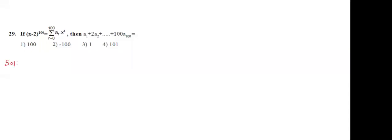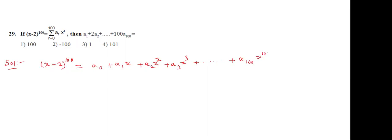Now observe the 29th question. (x-2)^100 is expanded as a₀ + a₁x + a₂x² + a₃x³ + ... + a₁₀₀·x^100. But a₀ is missing — they started with a₁. a₀ is missing, meaning the constant vanishes when we apply differentiation. So differentiate with respect to x: the derivative of (x-2)^100 is 100(x-2)^99. On the right side, after differentiation: 0 + a₁ + a₂·2x + a₃·3x² + ... + a₁₀₀·100x^99.